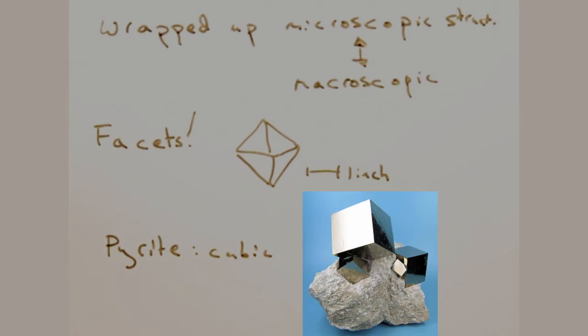Take pyrite for example, which has a cubic unit cell. Lo and behold, it also looks like a cube in its macroscopic form.